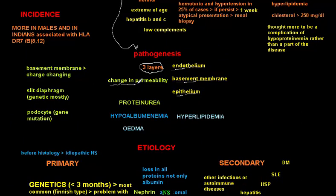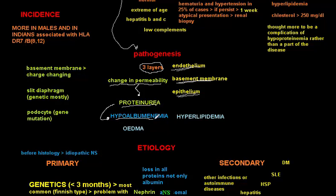There is a change in permeability of the endothelium, the basement membrane, and the epithelium to proteins, which leads to leakage of protein into urine — forming what we call proteinuria. When proteins are in the urine, we have less protein in the blood because protein has moved from blood to urine. This leads to hypoalbuminemia, since albumin is the most important protein in the blood.